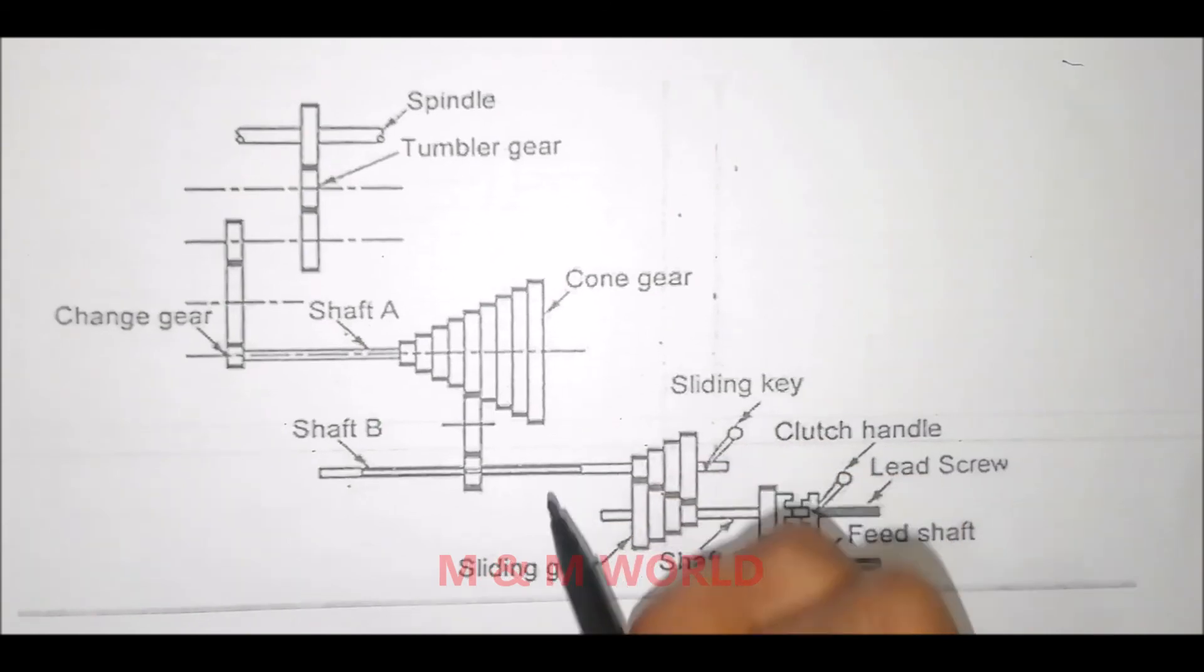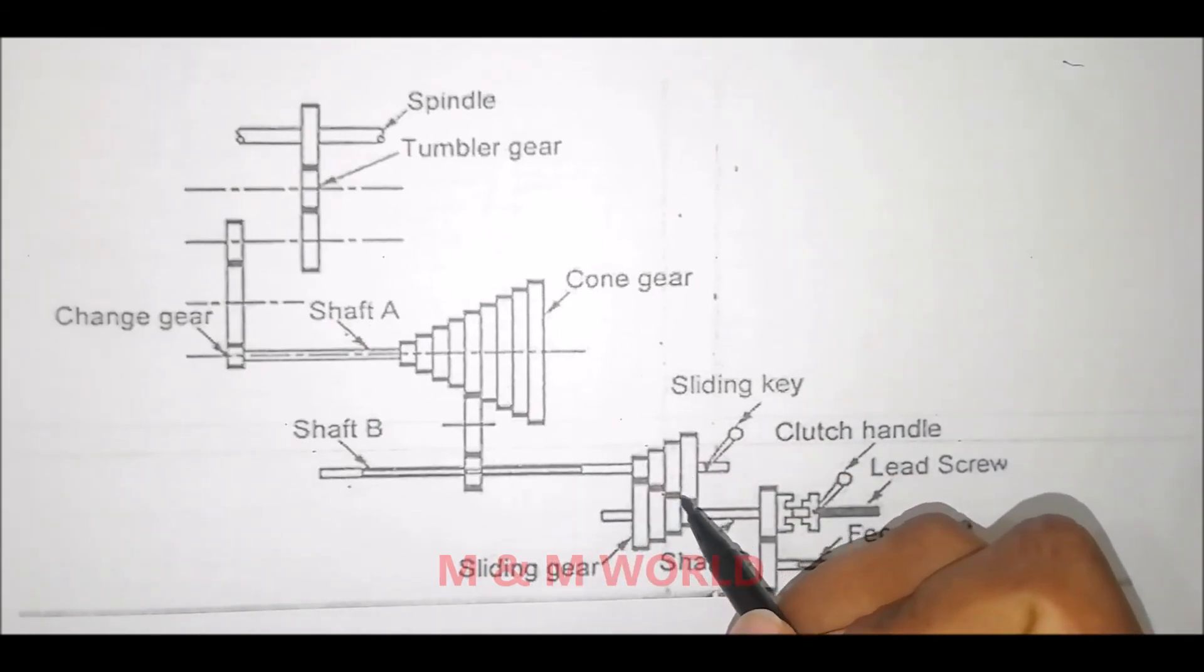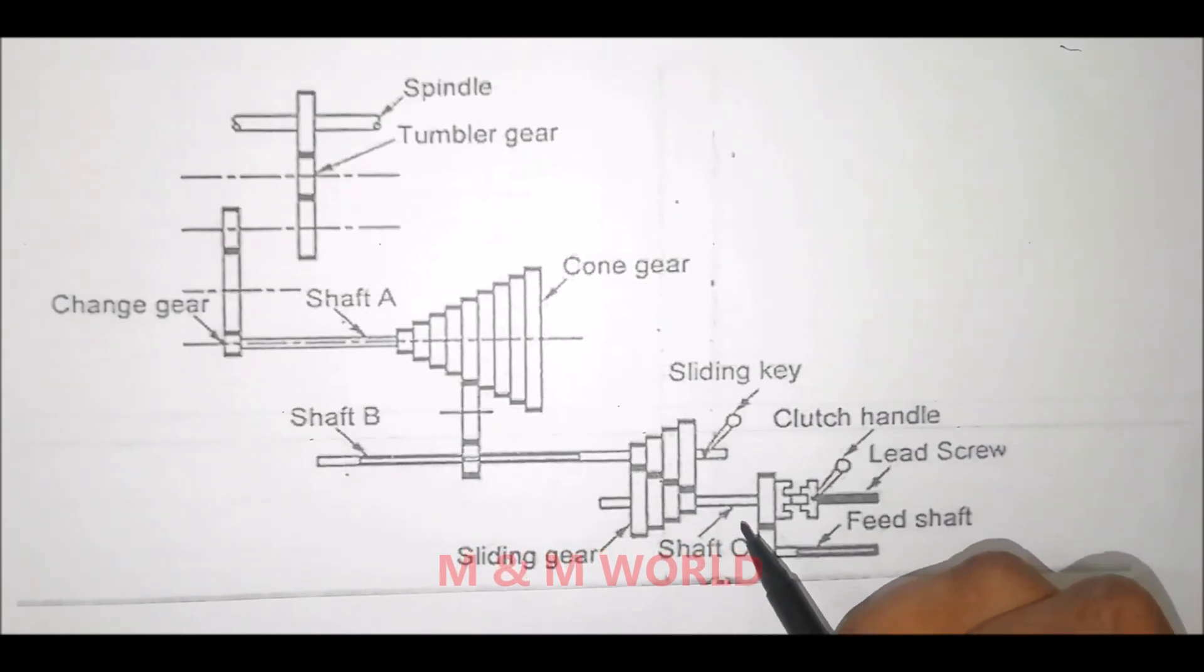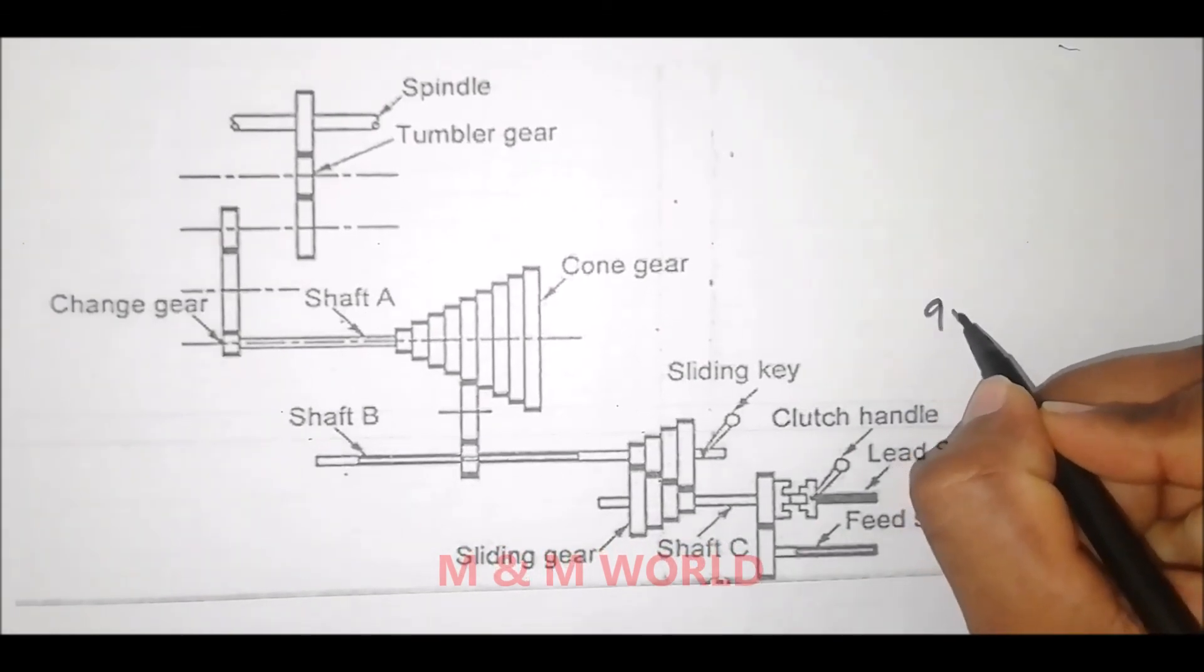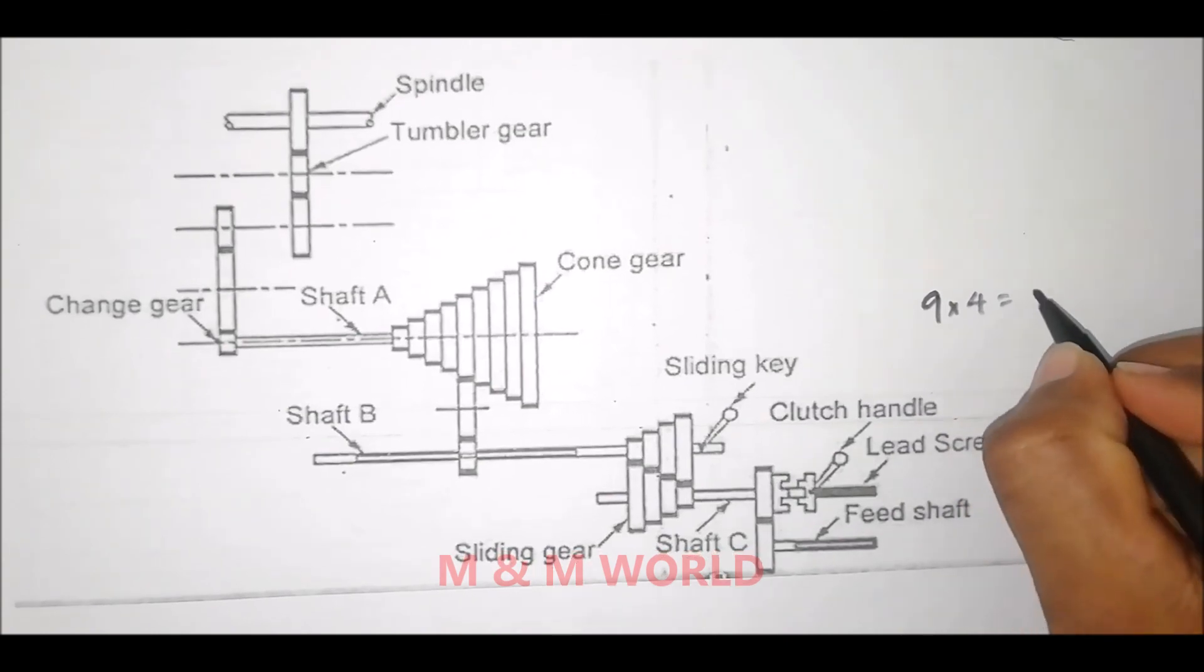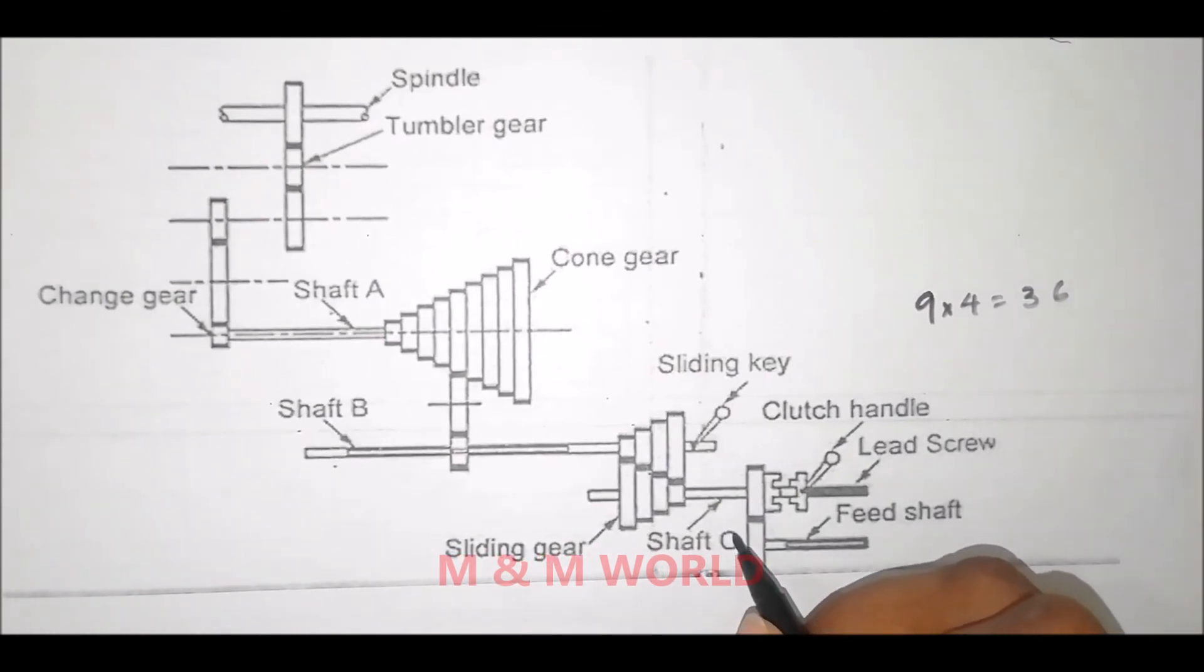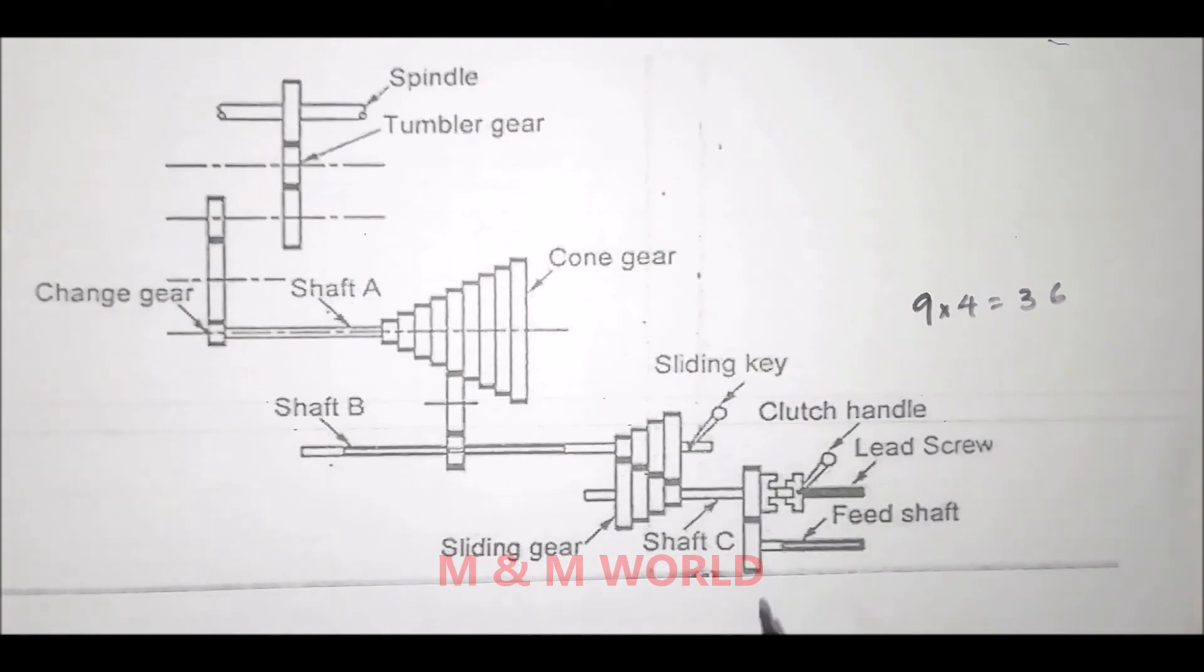36 different speeds can be obtained at shaft C. The clutch enables the lead screw to be engaged or disengaged, and the motion from the shaft C can be transmitted to the feed shaft with the help of gear trains.